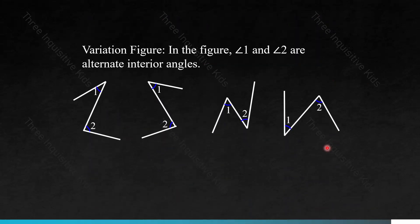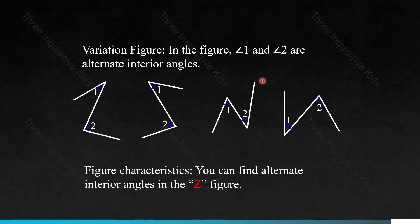Here's a variation. In the figures, angles 1 and 2 are alternate interior angles. The figure characteristic is that you can find alternate interior angles in a Z-shaped figure.